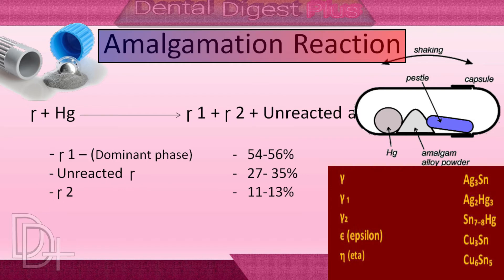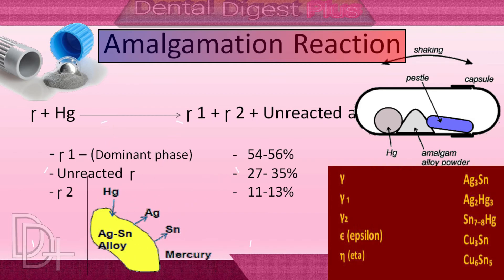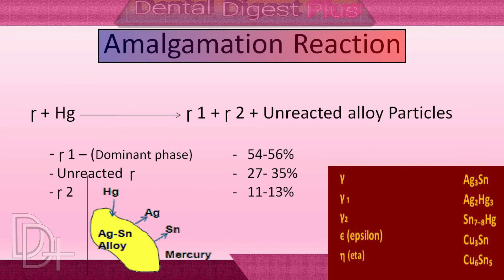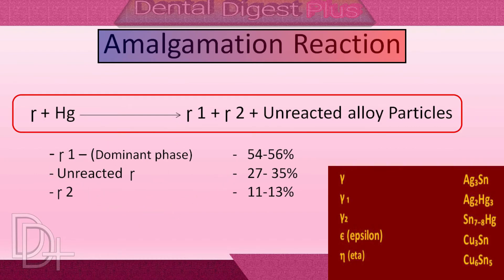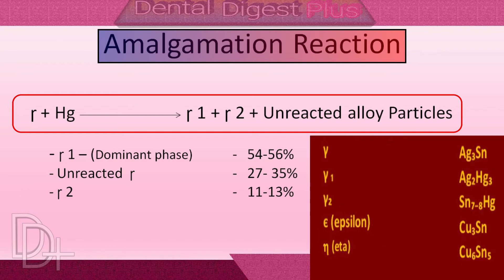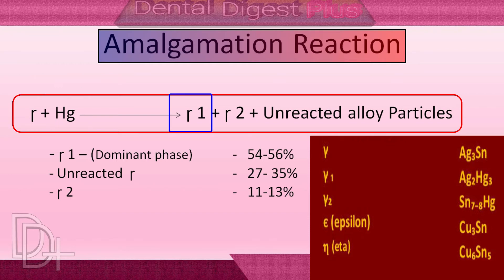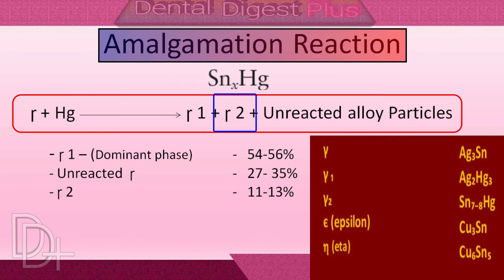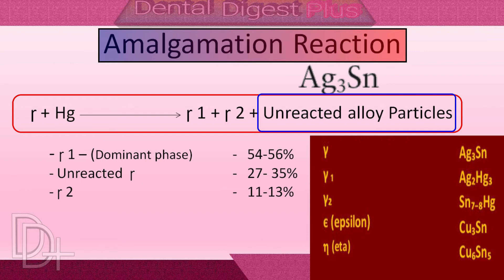Amalgamation occurs when mercury contacts the surface of the silver-tin alloy particles. When a powder is triturated, the silver and tin dissolve into mercury. At the same time, mercury diffuses into the alloy particles. Here you can see the basic reaction which occurs in low-copper lath-cut alloy: when trituration begins, gamma (Ag3Sn) reacts with mercury, forming gamma-1 (Ag2Hg3) plus gamma-2 (Sn8Hg), and unreacted gamma particles (Ag3Sn) are also found in the set matrix.